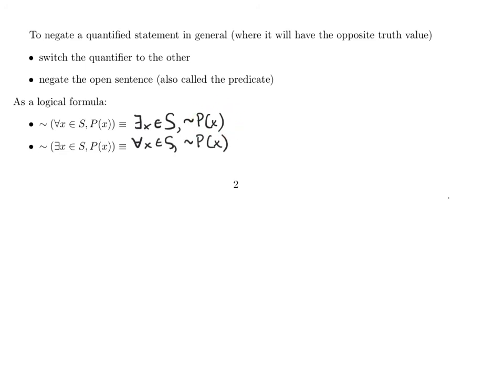For open sentences, they can sometimes be complicated — containing ands, ors, or nots. When you negate them, you may need to do some logical simplification using our rules from topic 4 to make the expression easier to work with, rather than just saying 'it's not true that P(x),' which doesn't really get to the heart of what the negation means.